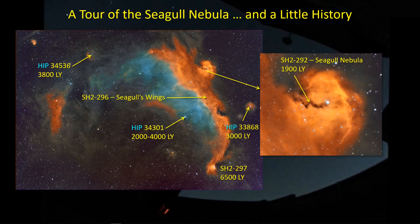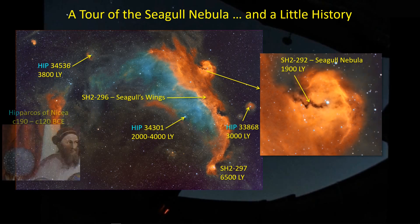This is where I started looking at what's going on around some of these stars. The star catalog I'm referencing is the HIP catalog. HIP refers to Hipparchos of Nicaea, an astronomer from about 2,100 years ago. Almost nothing of his work remains — it's almost all lost — and we only know of what he did by what others said about it.